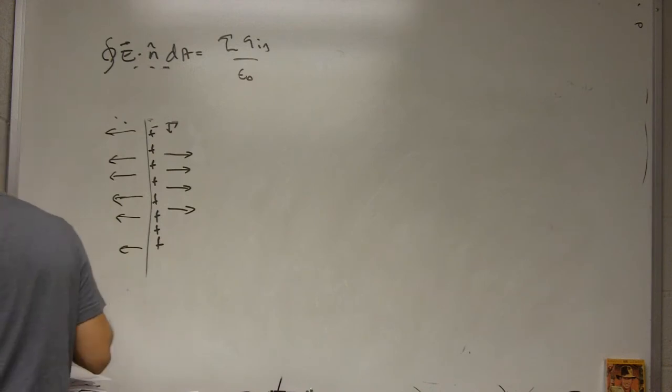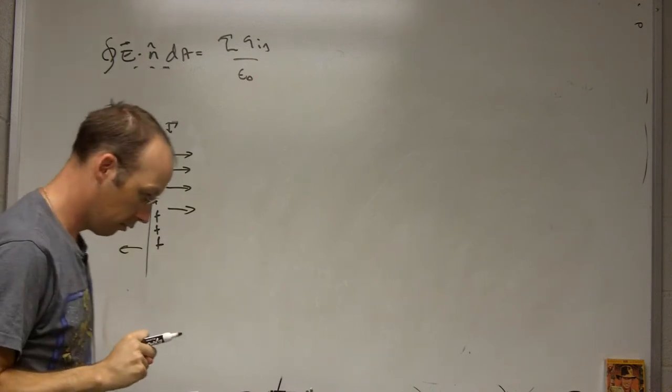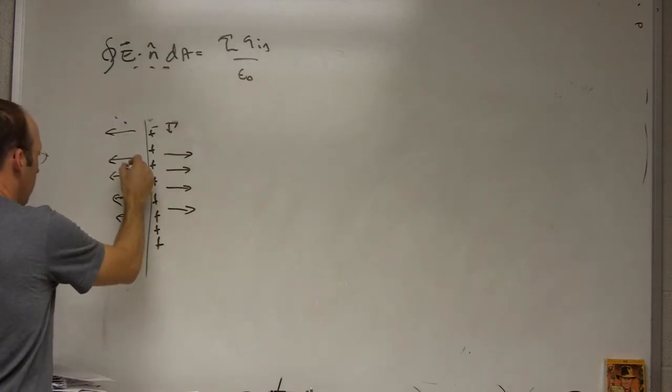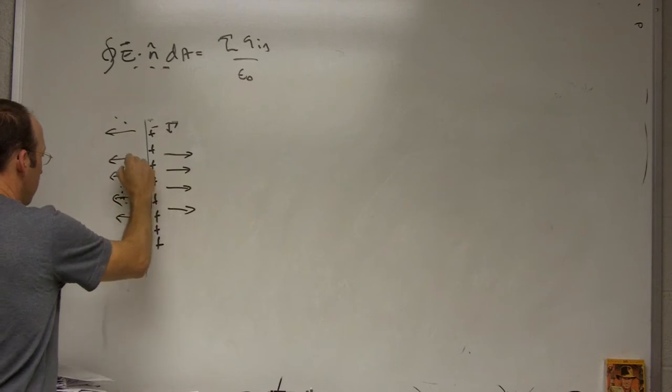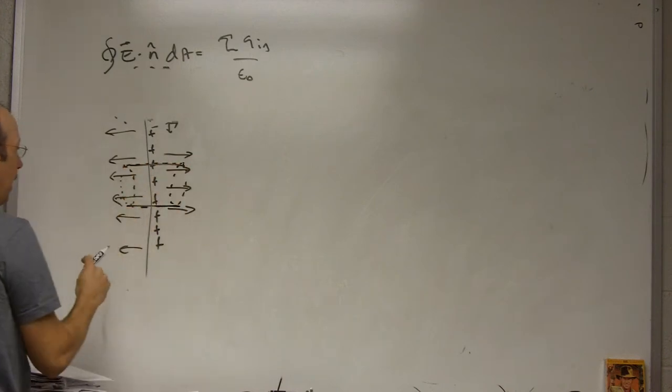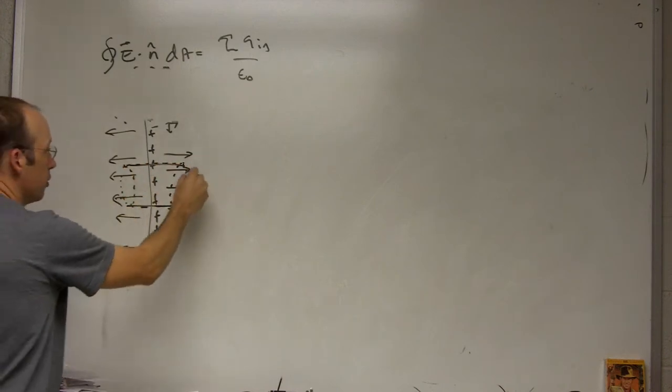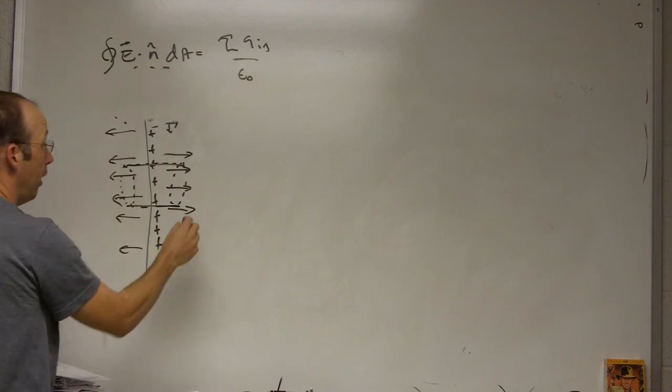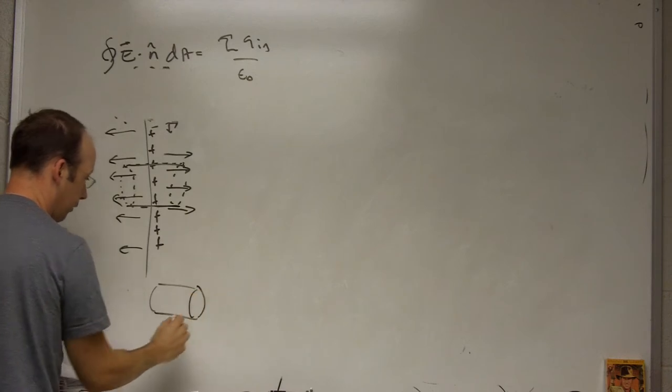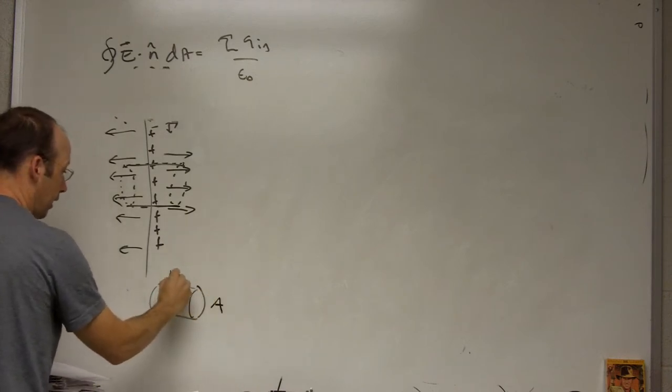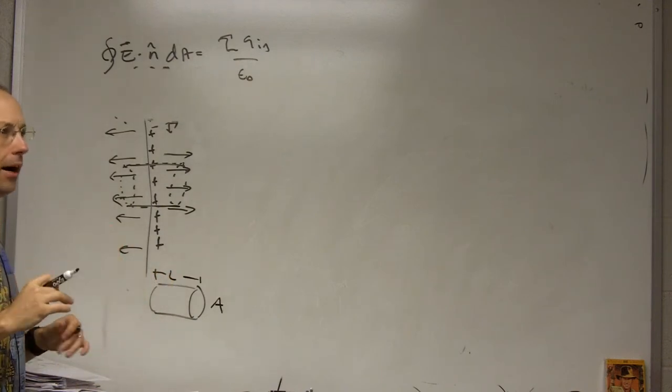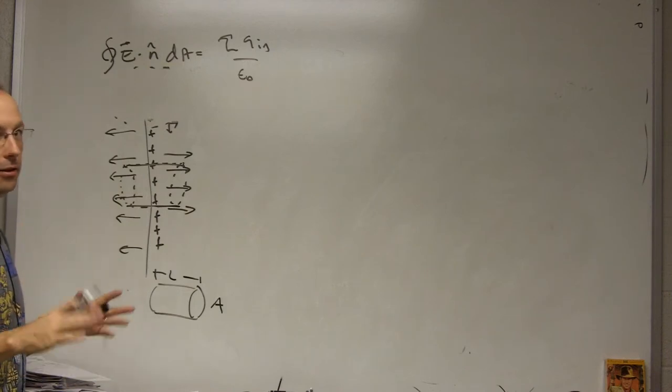So let's choose something smarter. I thought I had a blue marker. Oh well. Let's choose a cylinder. So it's like that. I'm just going to make it as simple as possible. It's going to be a cylinder, let me redraw the cylinder. It's like that, and this is an area A and a length L. A lot of books call this a pill box, if that makes you happy.